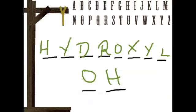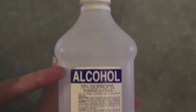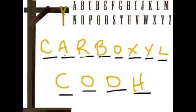Hydroxyl, OH — they're alcohols, like ethanol. Carboxyl, COOH — in acetic acid, that's vinegar, it's what makes it sour.